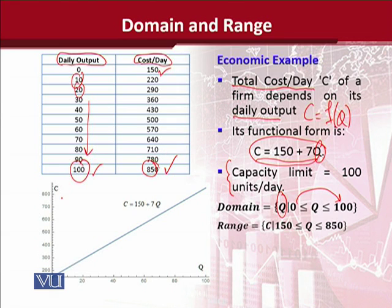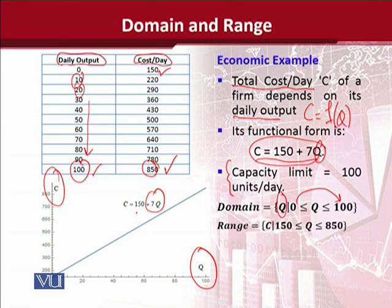You can make the diagram where the dependent variable is plotted on the y-axis, which is a convention, and the independent variable is on the x-axis. There is a straight line as we can expect. The 150 is the intercept hidden somewhere, and the 7q is showing the slope of the cost curve. In this way, we can use the domain and range to make a graph and understand the relationship between economic variables.